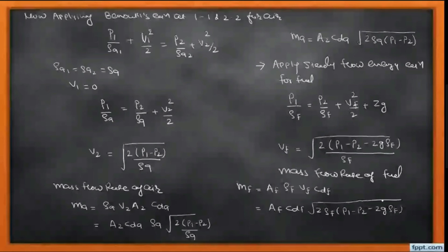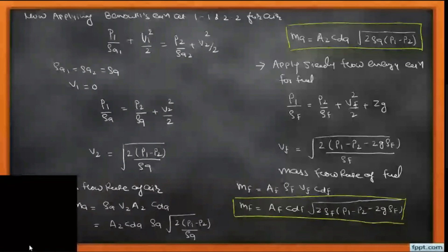So students, we get two important expressions: one is mass flow rate of air and second is mass flow rate of fuel. From these two expressions we calculate the air-fuel ratio. It is MA/MF. So we put down the values: A2 · CDA · √(2ρA(P1-P2)) divided by the corresponding fuel expression.